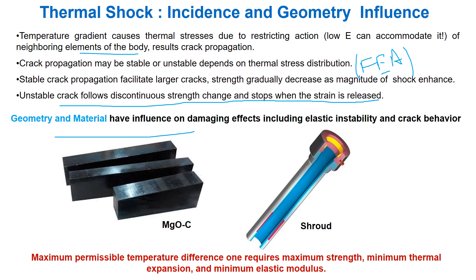Geometry and material both influence damaging effects including elastic instability and crack behavior. Two typical examples are magnesia carbon brick — flat surface and hollow tube — where stress distribution and thermal shock experience differ and require different equations. In brief, maximum permissible temperature difference requires maximum strength, minimum thermal expansion, and minimum elastic modulus. However, very high thermal conductivity may reduce steel processing temperature and increase energy loss.